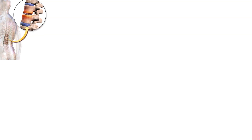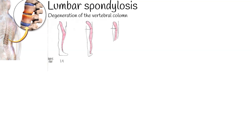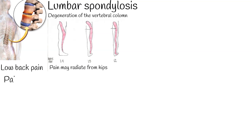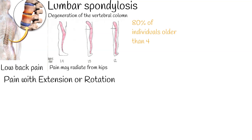Lumbar spondylosis is the degeneration of the vertebral column. The patient is typically greater than 40 years old. Pain may be present or radiate from the hips, with pain on extension or rotation. The neurologic exam is usually normal. More than 80% of individuals older than 40 years have lumbar spondylosis.